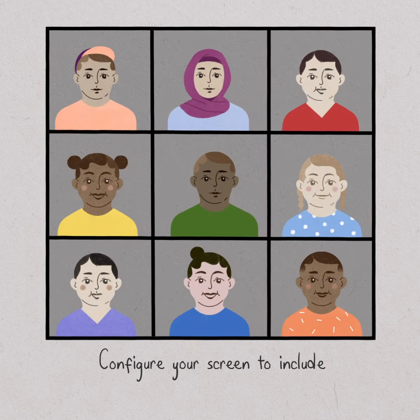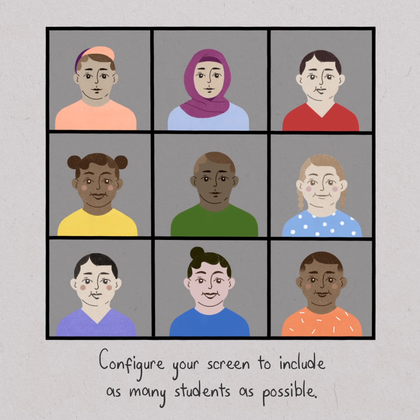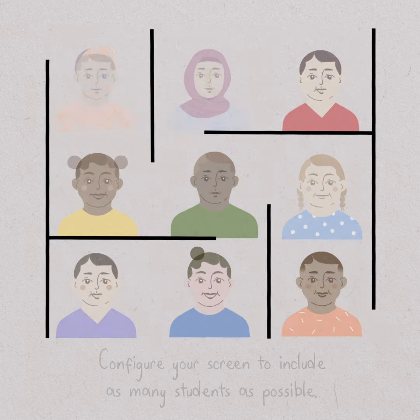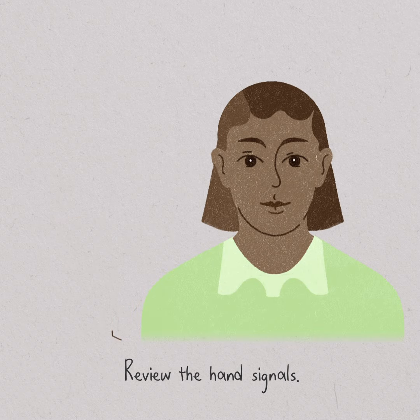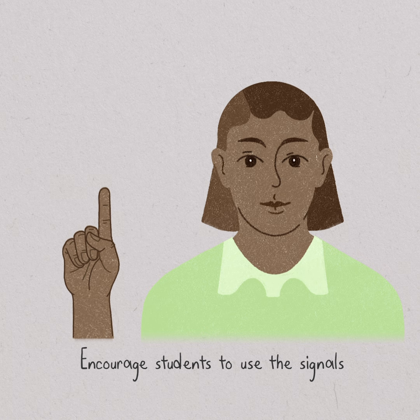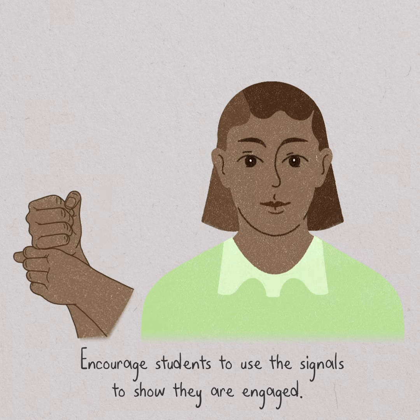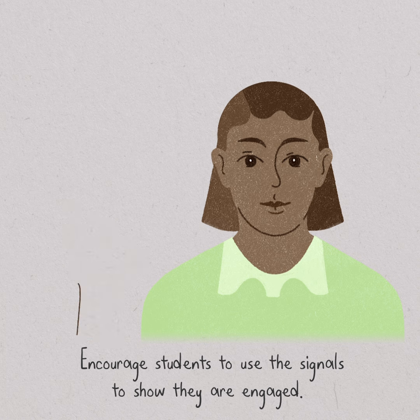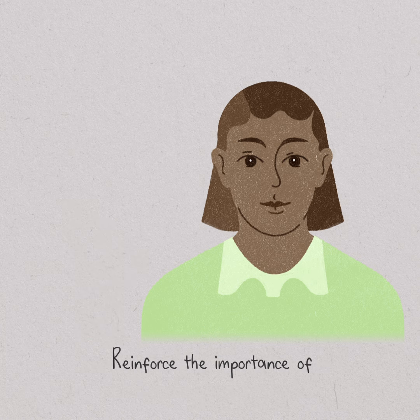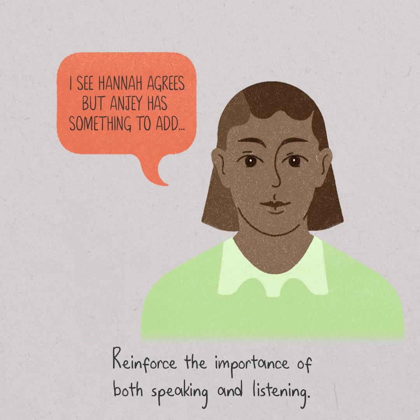At the beginning of every discussion, it helps to configure your screen so your view includes as many students as possible at one time. Review the hand signals so they are fresh in everyone's minds. Encourage students to use the signals to show they are engaged in the conversation, whether they plan to speak or not. Reinforce the importance of both speaking and listening by acknowledging non-verbal and verbal participants by name.